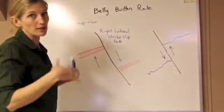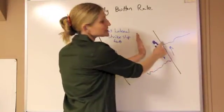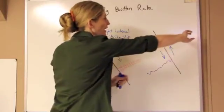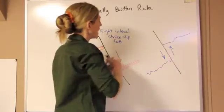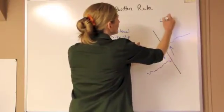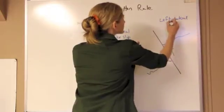But again, to go over that belly button rule, if we walk along the river, we have to look to the left to see the other side. Or if we come from this direction, we're always going to be looking to our left. So this is our left lateral strike-slip fault.